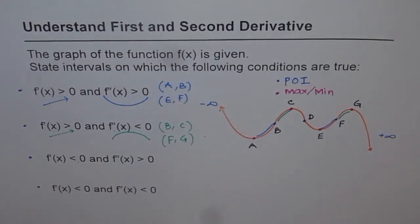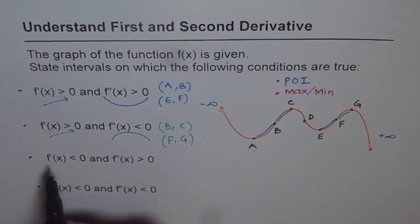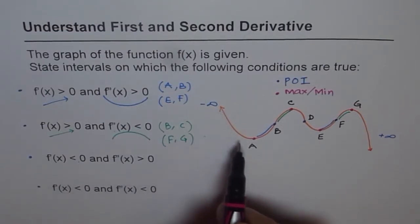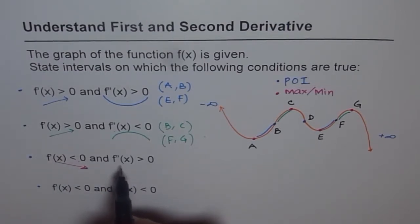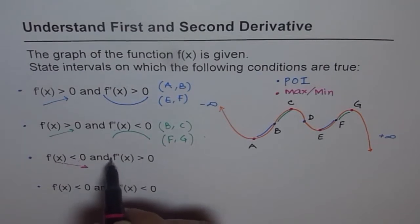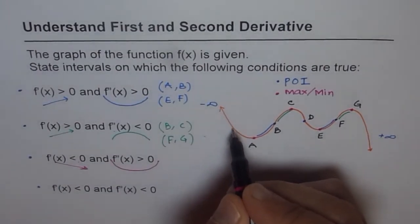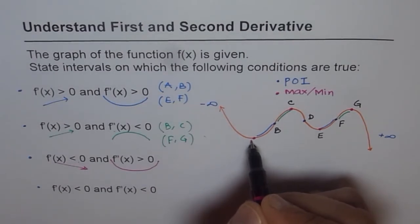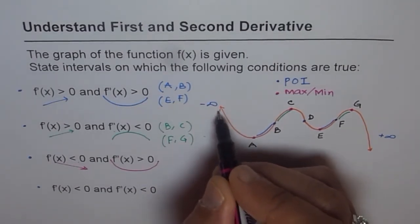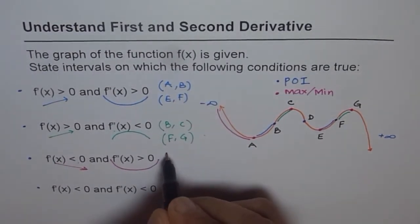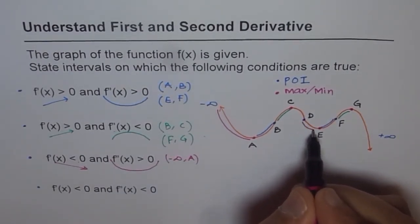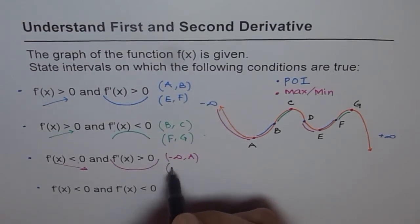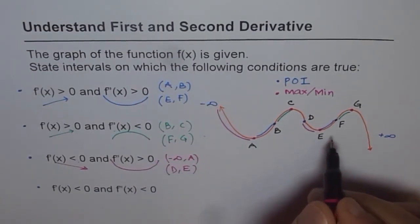Now f'(x) is less than zero — meaning the graph is decreasing — and f''(x) is positive, meaning concave up. So the graph has to be going downward and concave up. The concave-up region from here spans a section, and after that it is actually increasing, so that doesn't work. The portion that is decreasing and concave up gives us minus infinity to A as one solution, and also D to E as another interval.